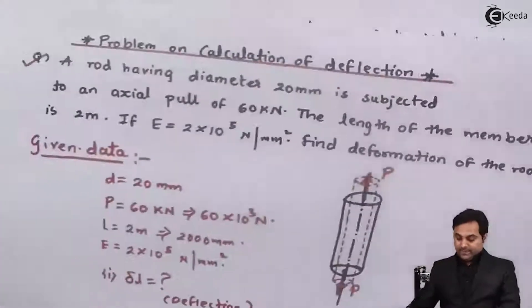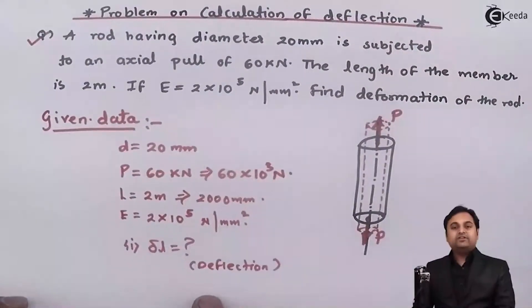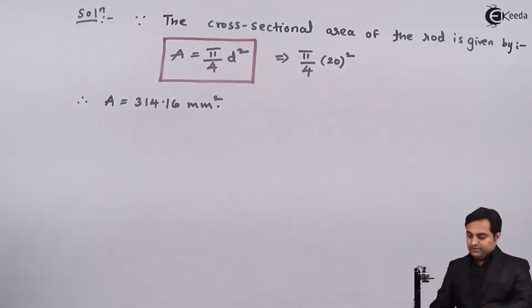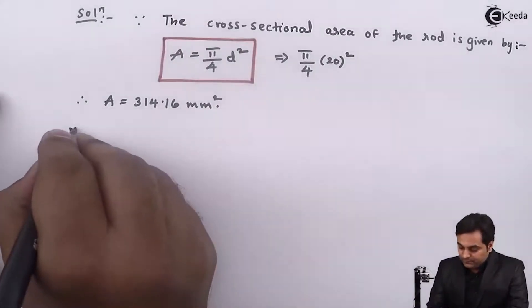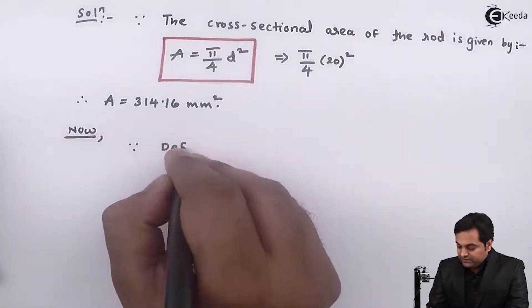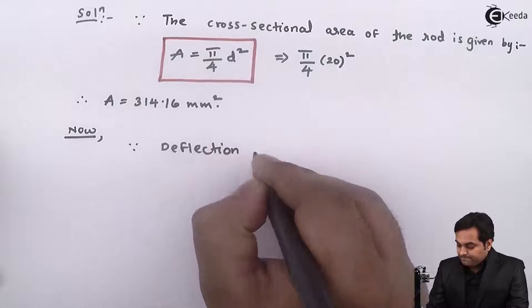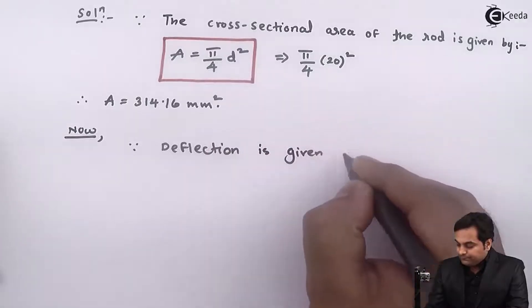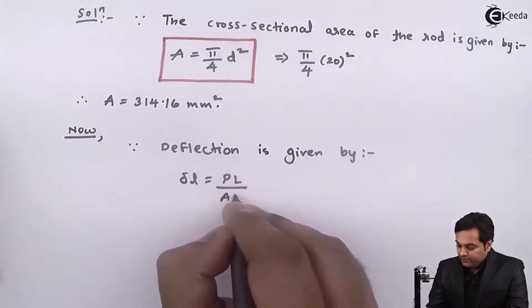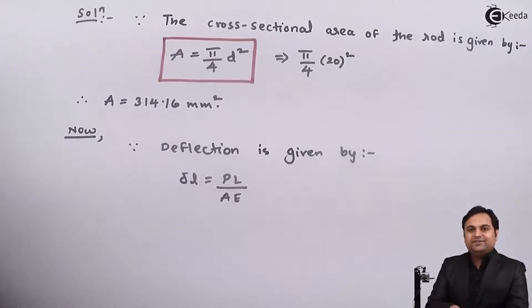Next, as we have to calculate the deflection, I use the formula for calculation of deflection. Since deflection is given by delta L is equal to PL upon AE, this is the formula of deflection.